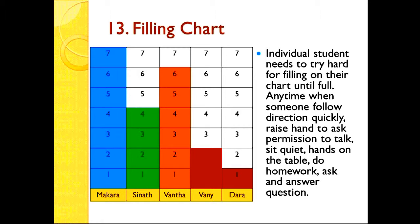Number thirteen: filling chart — like a bar graph. Each student tries to fill in their chart until it is full. Anytime someone follows directions quickly, raises their hand to ask permission to talk, sits quietly with hands on the table, does homework, or asks and answers questions, the teacher gives a mark. You can see in the example: the blue one is the highest, the orange and brown are at six, the green at four, the red at two, and the dark brown at only one. This shows students what their behavior looks like.